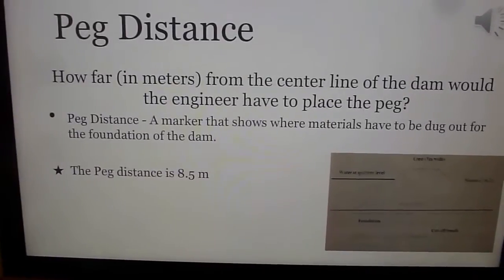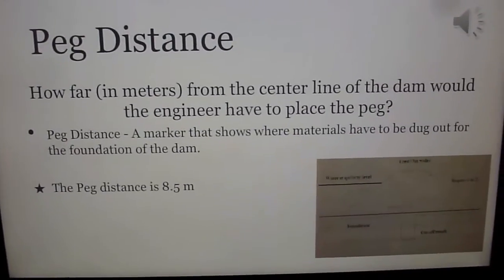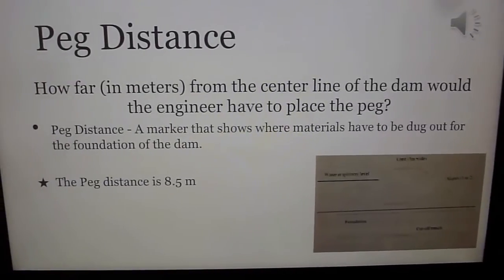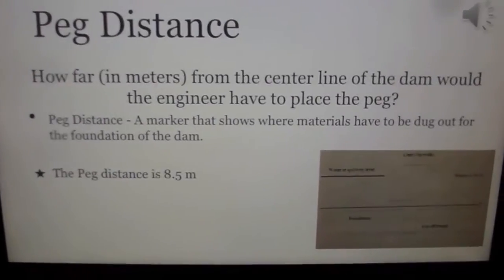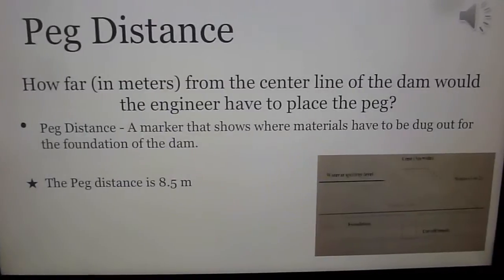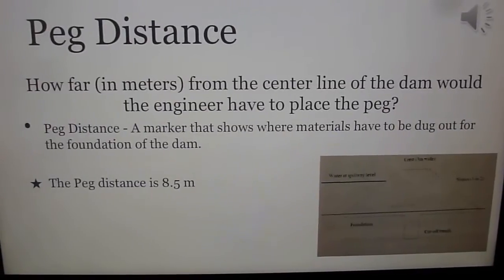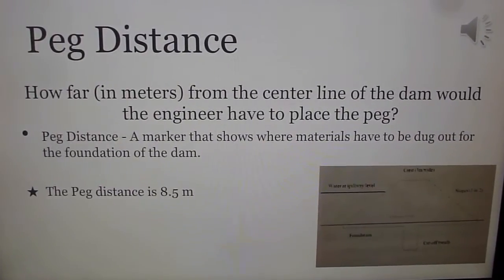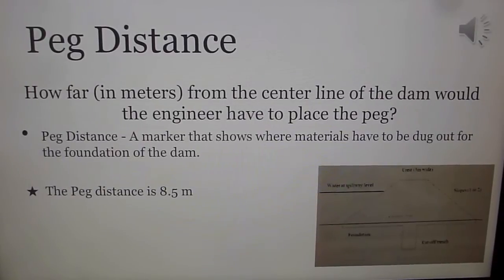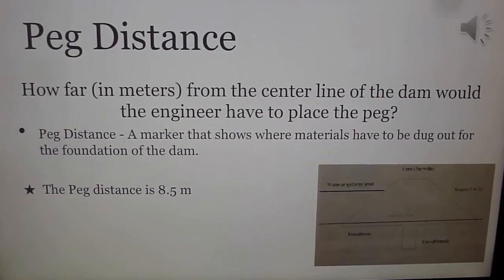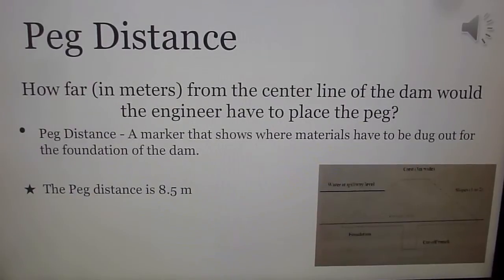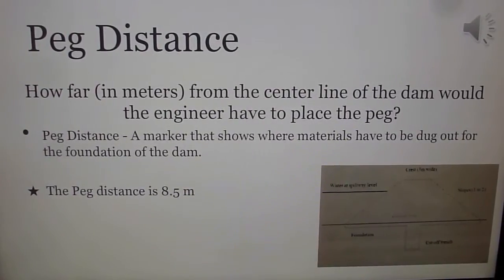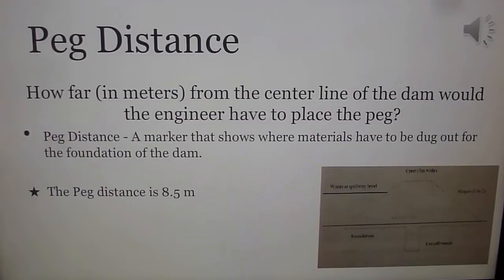The peg distance is used to show workers what and where materials need to be excavated in order to build the dam foundation. We know that the maximum crest height is 3.5 meters. To find the bottom length, we use rise over run, which is 1 over 2. So we use cross multiplication: 1 over 2 equals 3.5 over x. 3.5 times 2 equals 7. So 7 meters is the bottom of the triangle, and it's 1.5 more meters to the center, so we add 1.5 to 7 and get 8.5 meters.